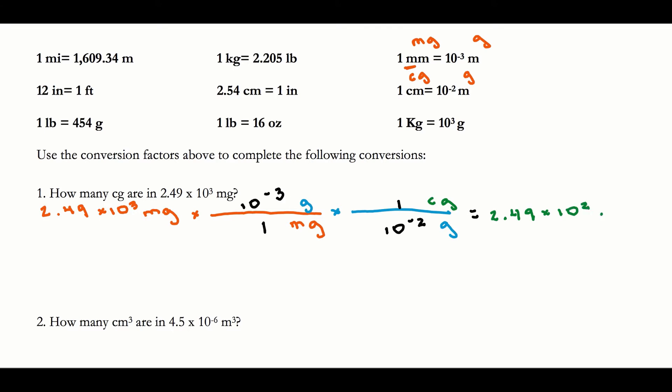Let me quickly double-check sig figs and units. 2.49 has three sig figs, and 2.49 also has three sig figs. My units should be centigrams, and I put centigrams — so I'm going to box off my answer.